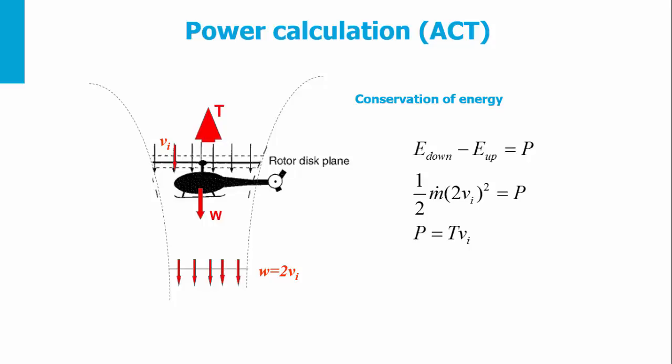Therefore, the kinetic energy is 1/2 ṁ(2Vi)². This has to equal the power. On the other hand, the power is also thrust multiplied by the velocity, which is Vi, the induced velocity at the rotor level.